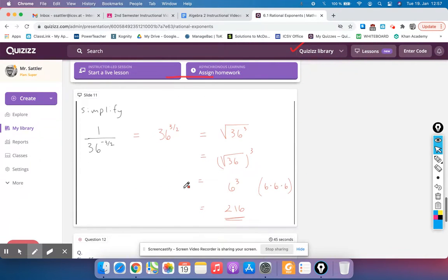Another one where we've got this fraction with a negative. So we want to first make that positive by moving it upstairs. So we get 36 to the positive 3 halves. And then we just do the same. The 2 is right here. We move the 3 outside parentheses. We do the square root of 36, which is 6. And then apply the cube. 6 times 6 times 6 is 216.